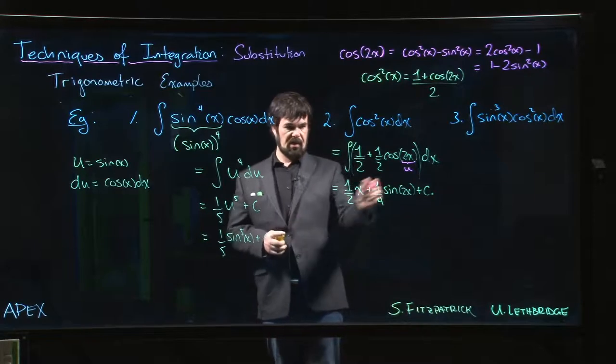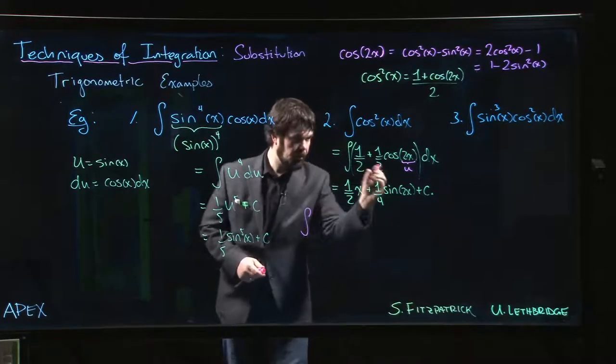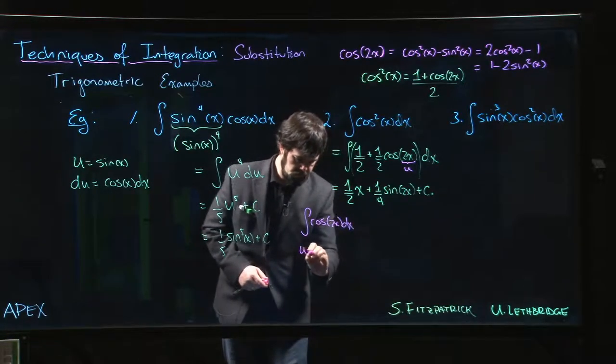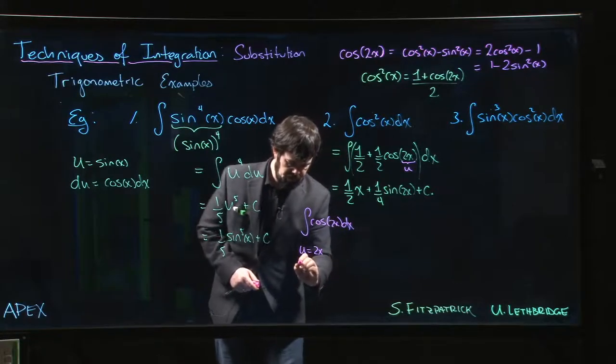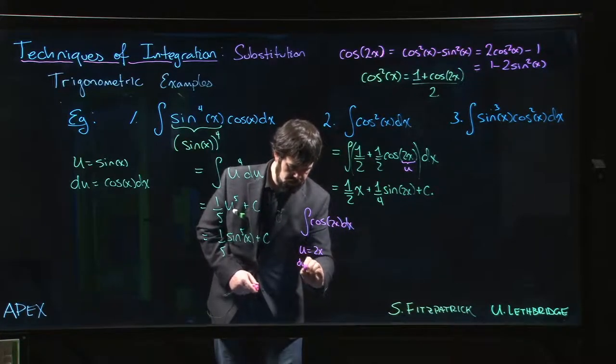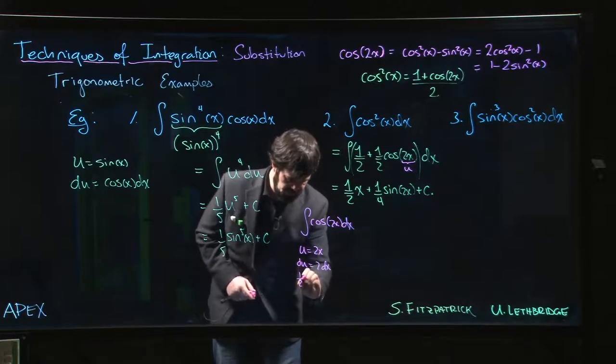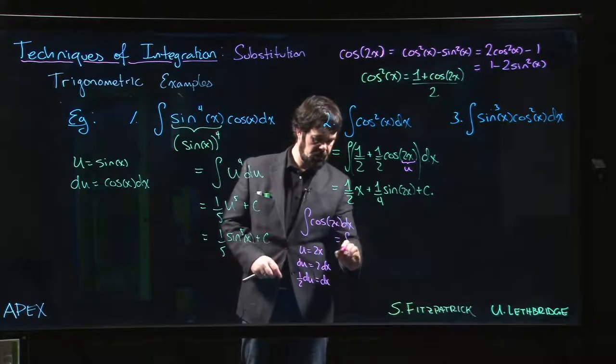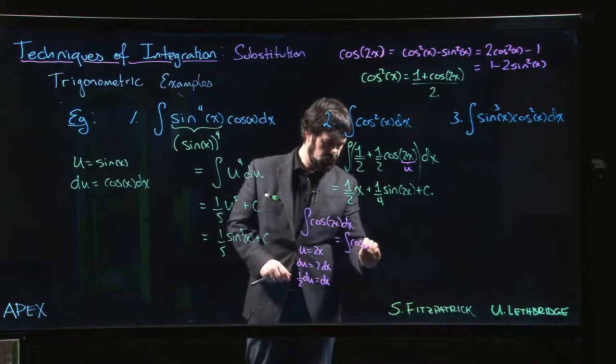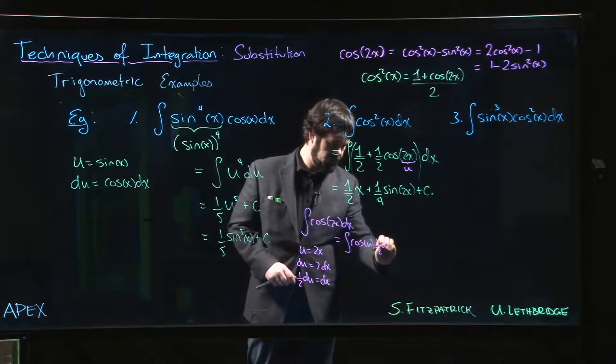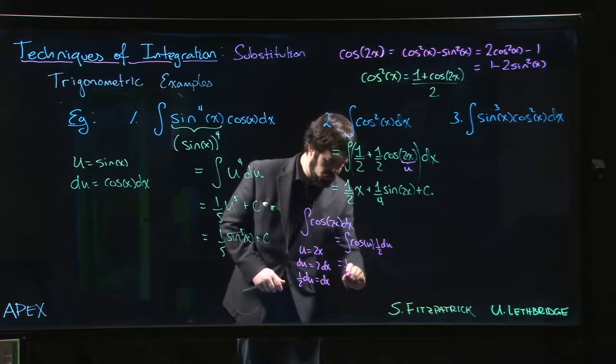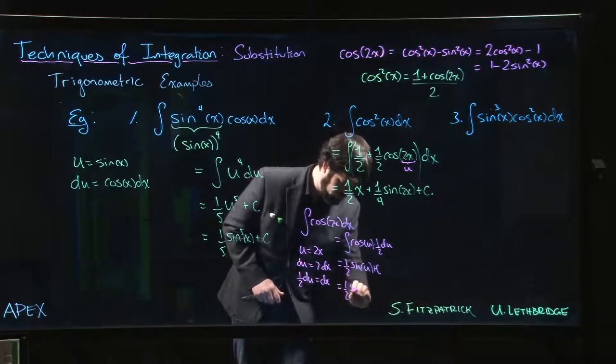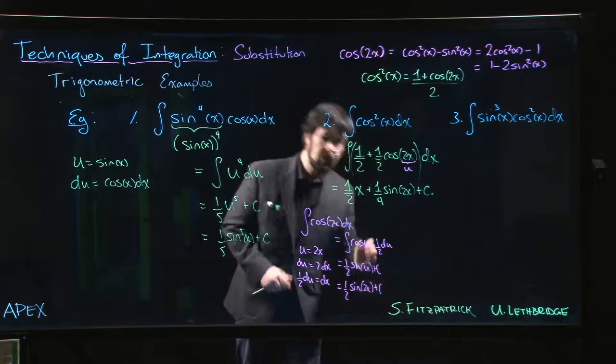Again, in case you missed that last step, let me just point out that when we're doing the integral of cos 2x dx, we can let u equal 2x, so du is 2 dx, so half du is dx. And this becomes the integral of cos u times a half times du, and that just gives you 1 half sine u, which is 1 half sine 2x.